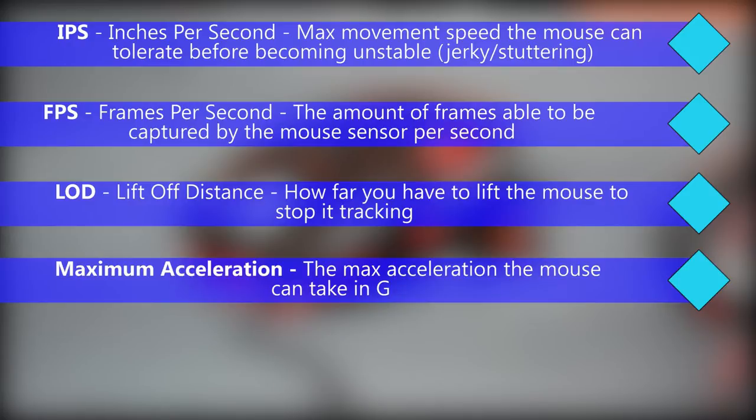Maximum acceleration is pretty self explanatory — it's the maximum acceleration the mouse can take. This is measured in G and is commonly around 30G for most modern gaming mice. Like IPS, this is unlikely to ever be a problem for the large majority of gamers.